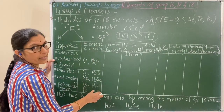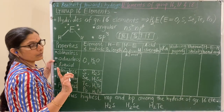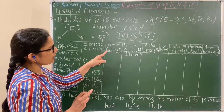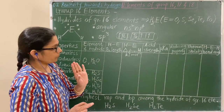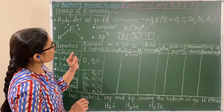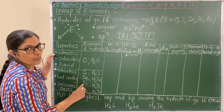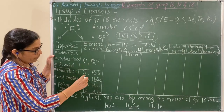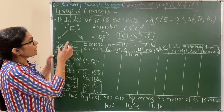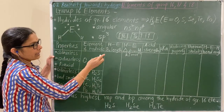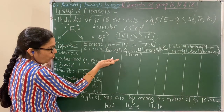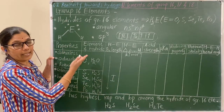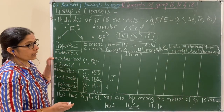This part is very important. In group 16, going down the group, size goes on increasing due to addition of new shells. As size increases, the E–H bond length also goes on increasing.